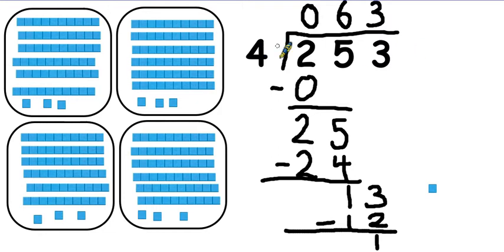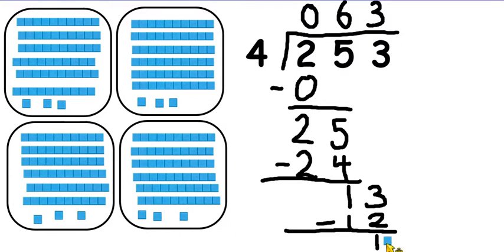So 253 divided by 4 is 63, because you can see that we've shared those out into equal groups and we've just got that 1 left over. So our answer is 63 remainder 1.